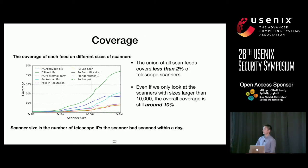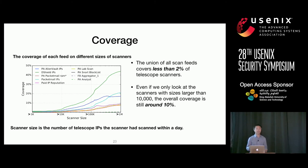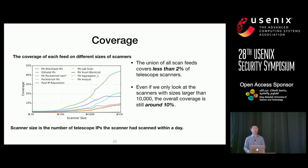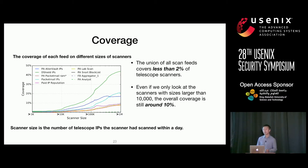This diagram shows the coverage of each scan feed for scanners of different sizes, where scanner size means the number of telescope IPs a scanner has scanned within a day. The DSHIELD IP feed outperforms all other feeds on the coverage metric. However, looking at the big picture, the union of all scan feeds together covers less than 2% of telescope scanners. Even focusing only on large scanners — those with a size over 10,000 — overall coverage is still only around 10%. This implies that having a large list of threat intelligence feeds does not necessarily guarantee good coverage.